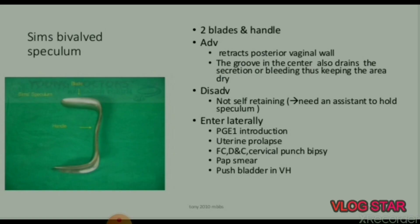Welcome back to my channel Miss Medicine. Today we will discuss gynae instruments. The first instrument is Sims bivalve speculum. It has two blades and one handle. Advantages of Sims bivalve speculum: it retracts the posterior vaginal wall. The groove in the center also drains secretion or bleeding, thus keeping the area dry. Disadvantage: it is not a self-retaining instrument and needs an assistant to hold it.